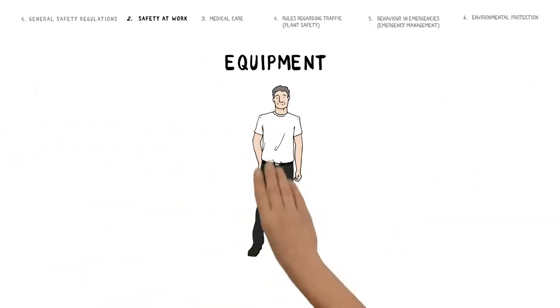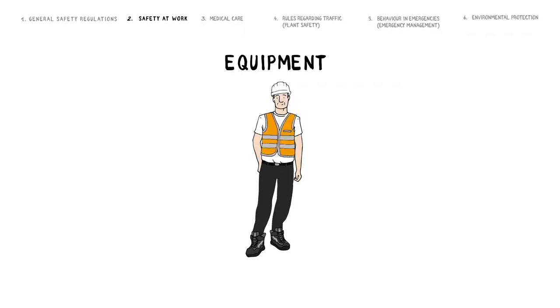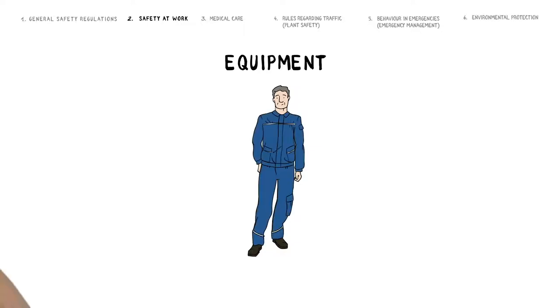Standard personal safety equipment comprises head and eye protection, footwear and appropriate clothing. Additional safety equipment is required for certain operational areas or certain activities. Pay attention to the relevant instructions of the operational facilities.